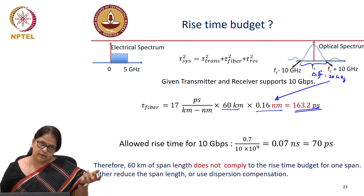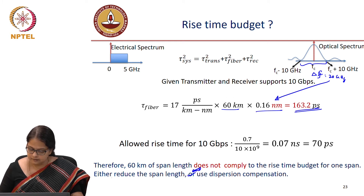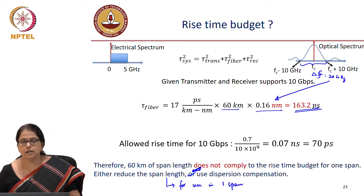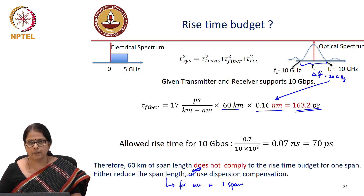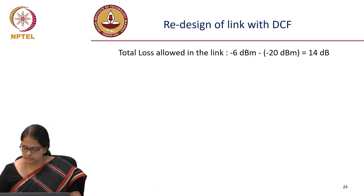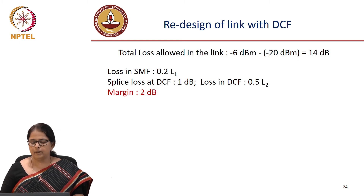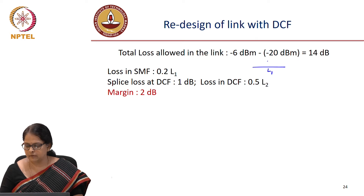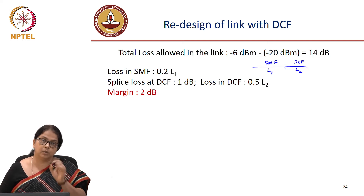Either we have to reduce the span length, as we did earlier, or we need to do dispersion compensation. Reducing span length only works for one span — increasing the number of spans does not solve the problem. If using one span, you have to reduce the span length or do dispersion compensation if increasing fiber length. How do we do dispersion compensation? We start with loss. Loss in SMF is 0.2 dB/km × L1. We have L1 km of SMF and need L2 km of DCF. We need to find L1 and L2 satisfying both the loss budget and the dispersion compensation constraint.